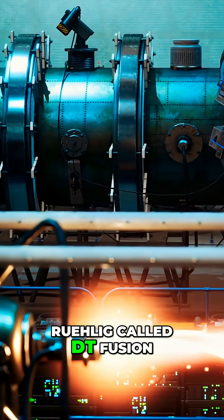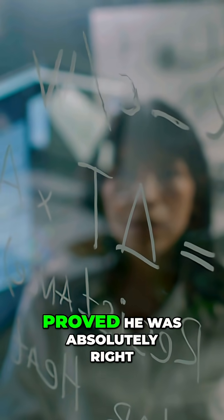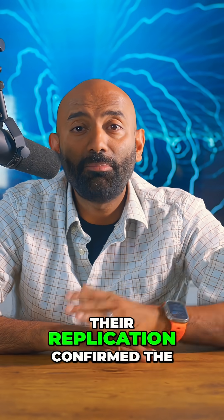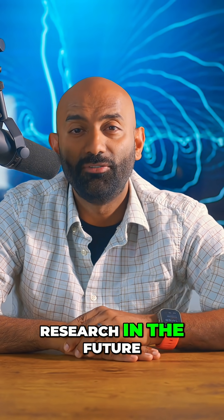Rulig called DT fusion exceedingly probable in 1938, and modern scientists just proved he was absolutely right. Their replication confirmed the findings and opened doors to more accessible fusion research in the future.